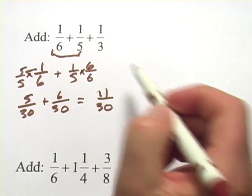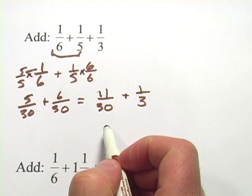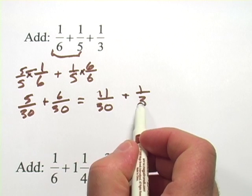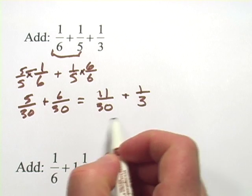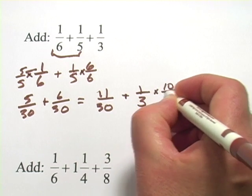Now I still have to add this one-third in. So plus one-third to get common denominators. Here I think I can just multiply this 3 by 10 to get 30. So the version of 1 I'm going to multiply this fraction by is 10 over 10.